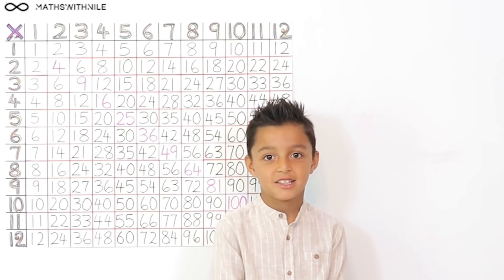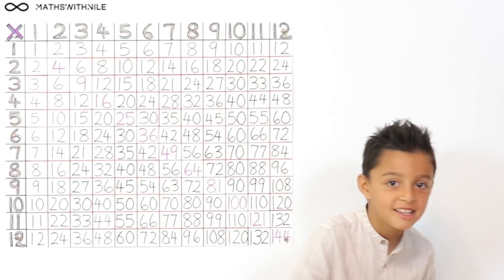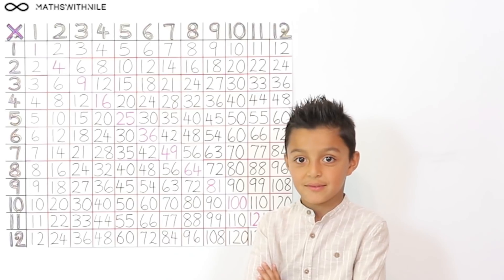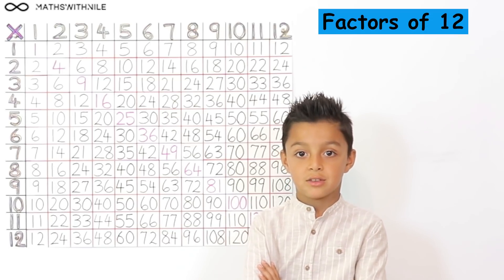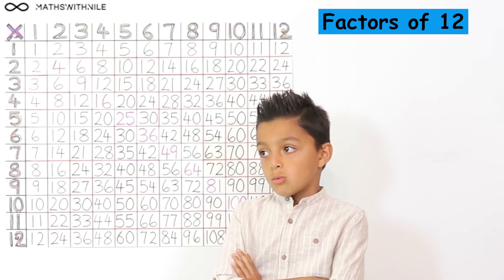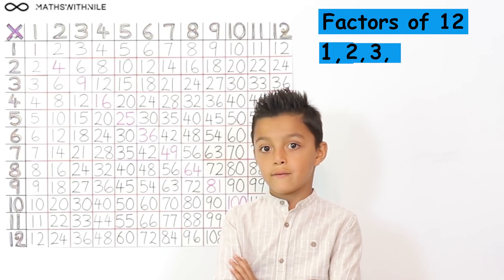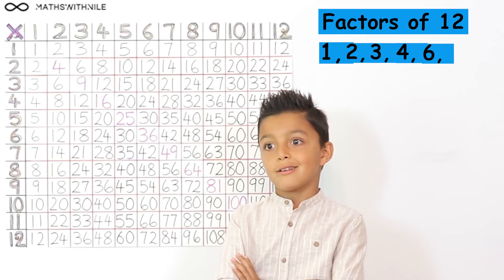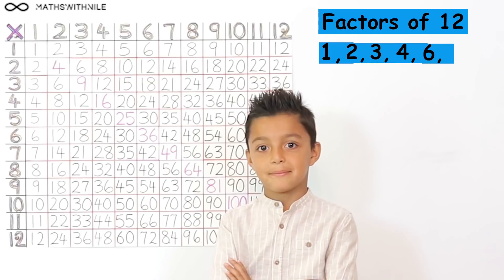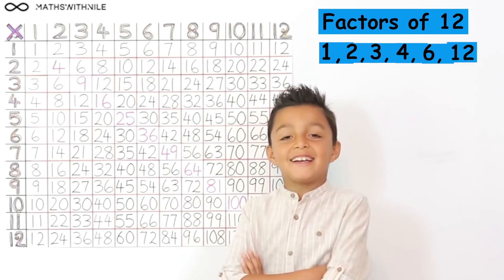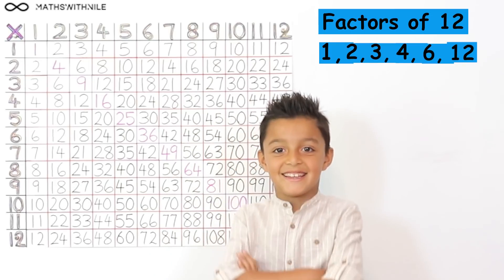Okay. Last question. Can you tell me all the factors of 12 in ascending order? 1, 2, 3, 4, 6. That's it. 1 more. The biggest one. And 12. And 12. Excellent. Very good, Niall.